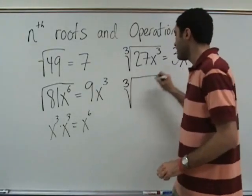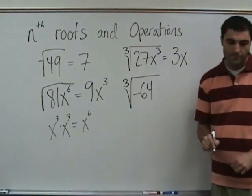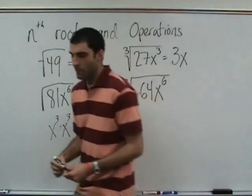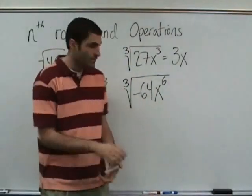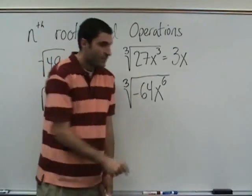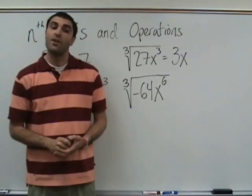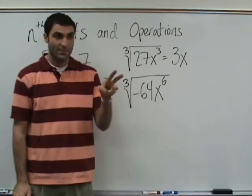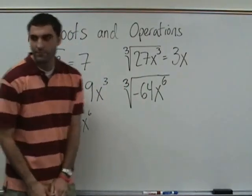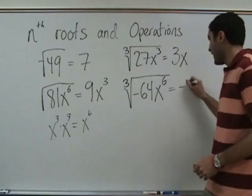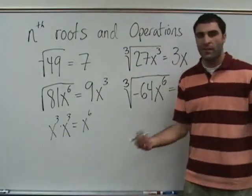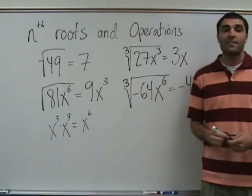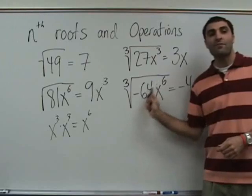Here comes more. Cube root of negative 64 x to the 6. What times what times what is negative 64? Negative 4. Negative 4 times negative 4 times negative 4 is negative 64. So you don't have to take the i out — i is not even relevant here. You can have cube roots of negative numbers.